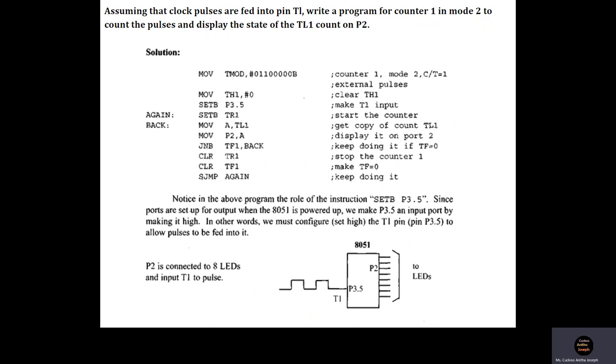And how do you configure the timer to function in counter mode? You should set the corresponding CT bar bit to be equal to 1. When CT bar is equal to 1, external clock pulses will be counted and the operation is called counter operation.